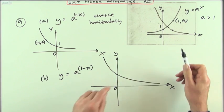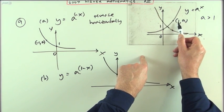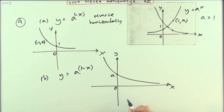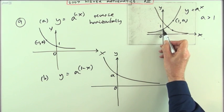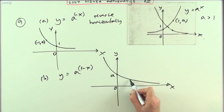That's the point that was originally at (1,a), so it's now at (0,a), so it's actually cutting at a. The point (0,1) has actually moved forward to here - that's the point (1,1).